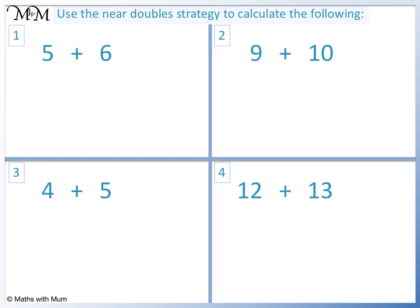Question 1. First we double 5. 5 times 2 equals 10. Because 6 is 1 more than 5, we add 1. 10 plus 1 equals 11.